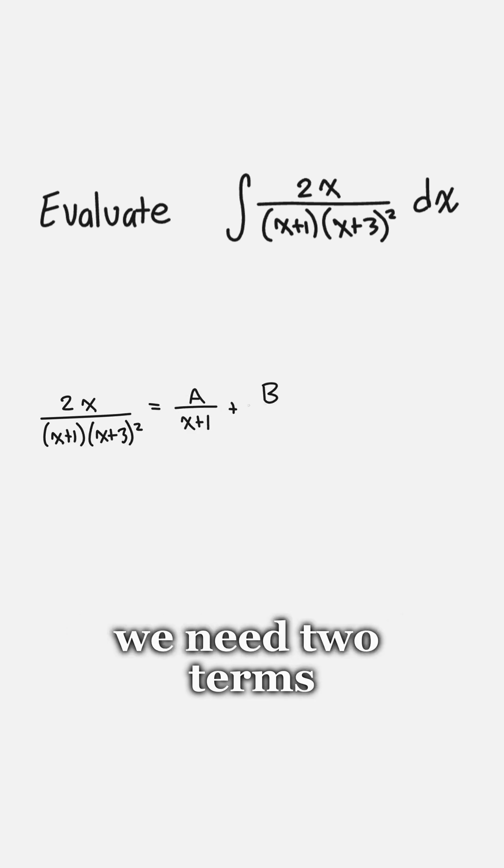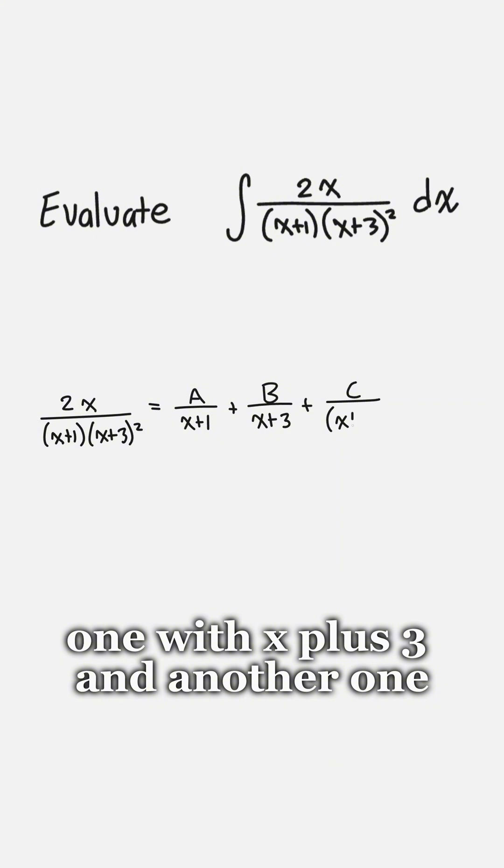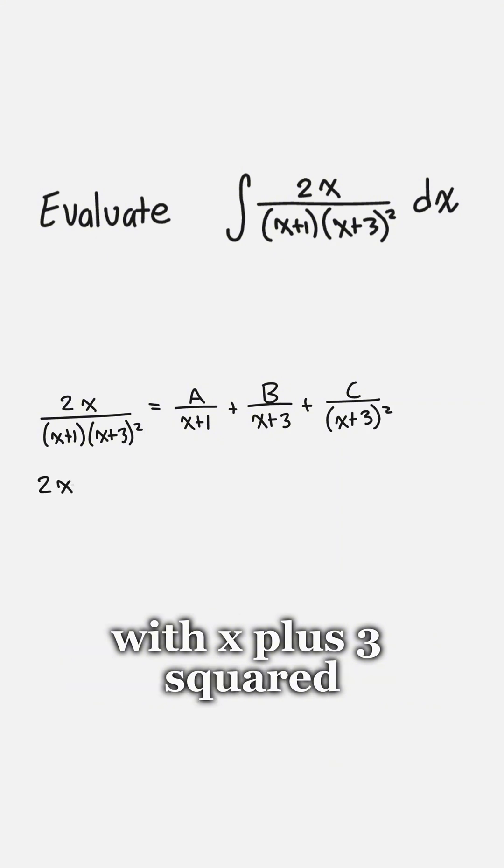For the repeated term, we need two terms, one with x plus 3, and another one with x plus 3 squared.